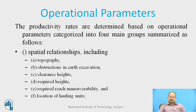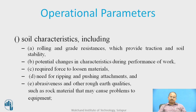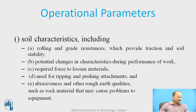Operational parameters are categorized into four main groups. The first is spatial relationship, which includes topography, obstruction in earth excavation, clearance heights, required heights, reach, manoeuvrability, and location of hauling units. The second is soil characteristics — rolling and grade resistance providing traction and soil stability, potential changes during work, required force to loosen material, need for ripping and pushing attachments, and abrasiveness or rock material that may cause equipment problems.